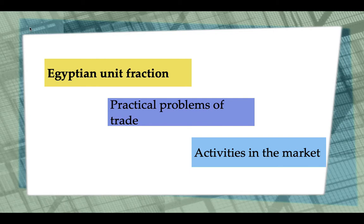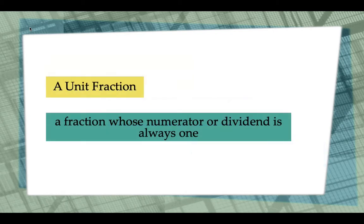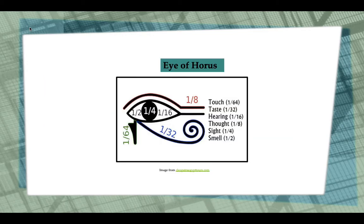For this, it is essential to remember that a unit fraction is a fraction whose numerator or dividend is always one. Ancient Egyptians solved their fractions using unit fractions based on the symbol of the Horus' eye, as seen on the papyri.